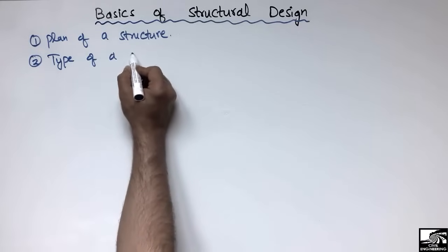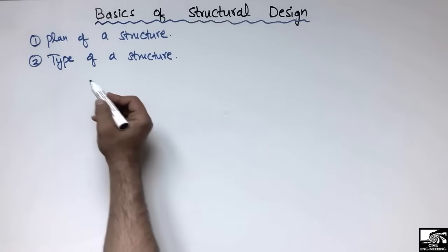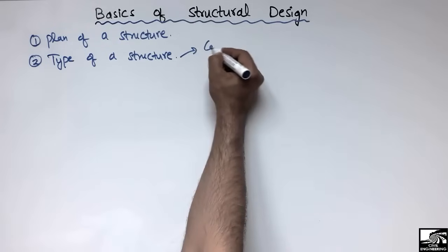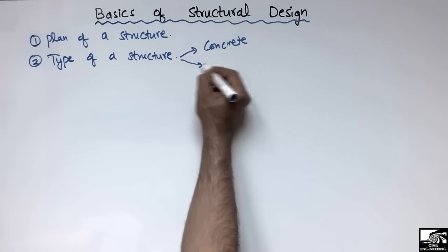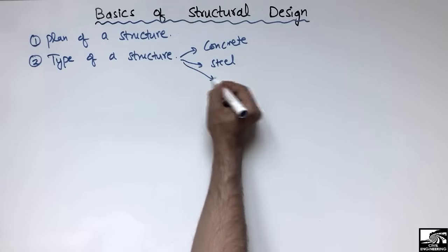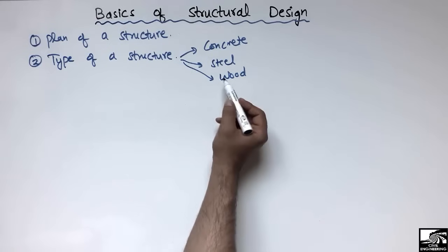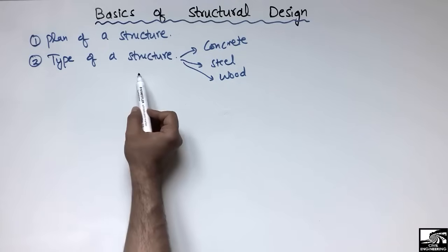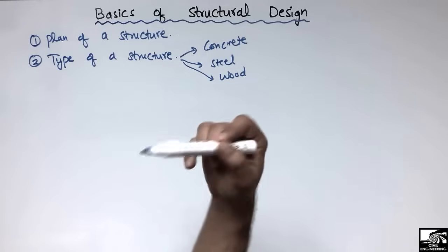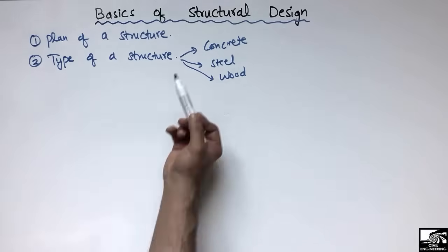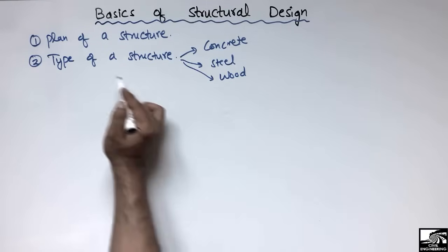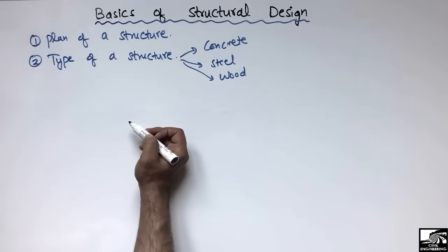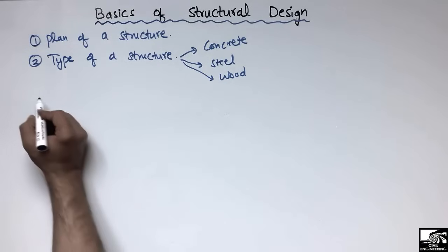The second step is the type of structure. This includes deciding which type of structure you want to construct — it may be a concrete structure, a reinforced concrete structure, a steel structure, or a wood structure. It depends on which type of material you want to use. The choice also depends on the economy and safety of the structure.